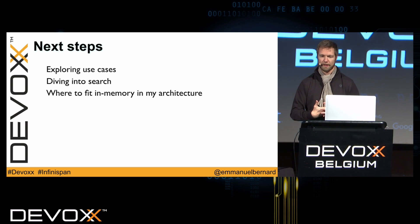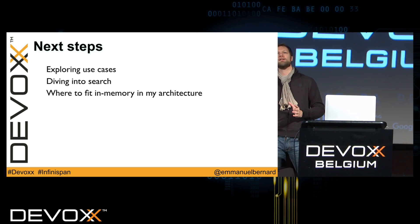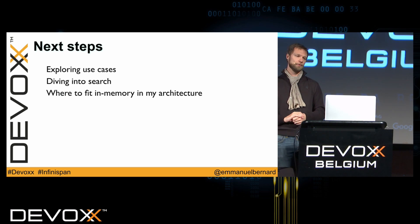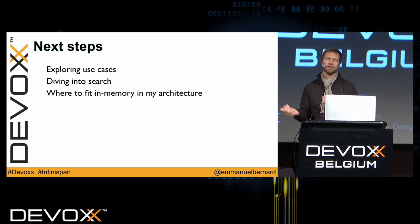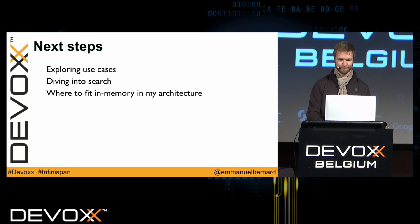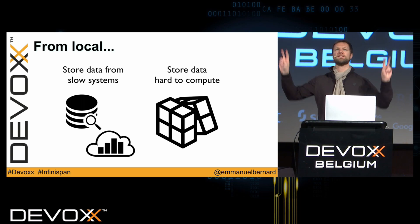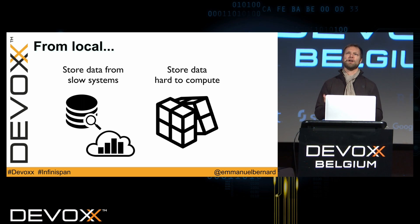The next steps in this presentation: I'll describe the use cases an in-memory system can address, then dive into the search capabilities which will hopefully surprise you, and then go back to use cases from an architectural point of view. The first use case you're probably aware of is caching — your back end is a bit slow, so you want to temporarily store the data either close to the app, like a hash map, to get faster access and release pressure on your back end.